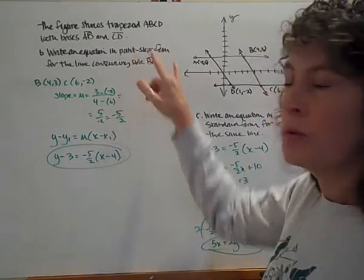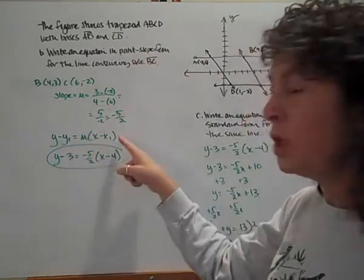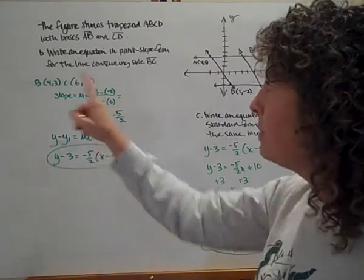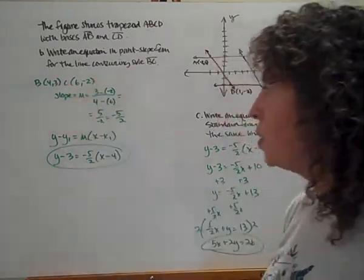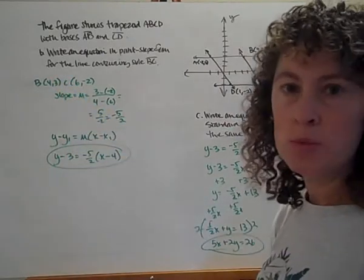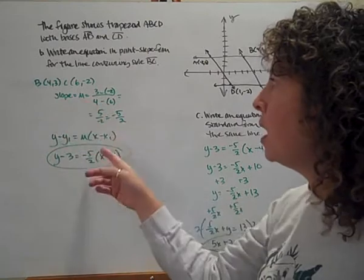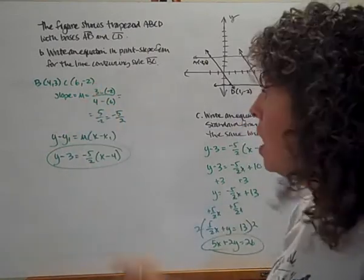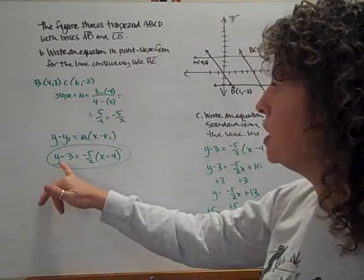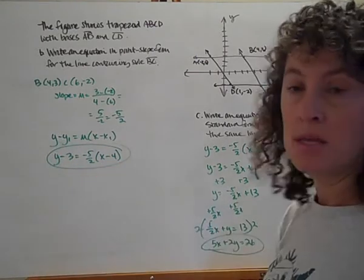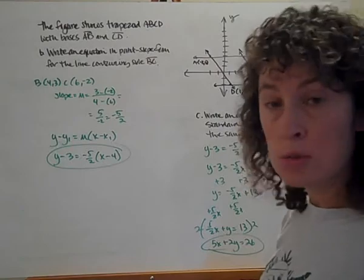This asks for an equation in point-slope form. So I'm going to pull out my point-slope form. I'm going to plug in my slope. And I'm going to also plug in one of these points. Now I used 4, 3 just because they're positive numbers. But you really could have used the other point also. So I could have had my equation be y plus 2 equals negative 5 over 2 in parentheses x minus 6. That would have worked just as well.